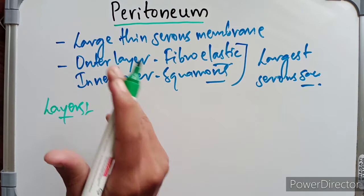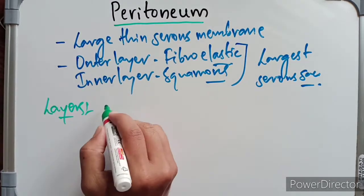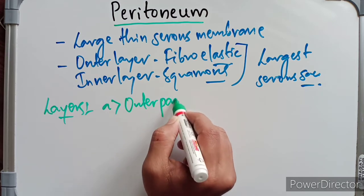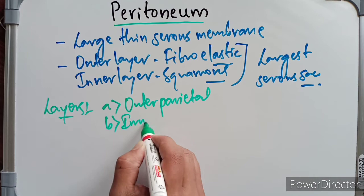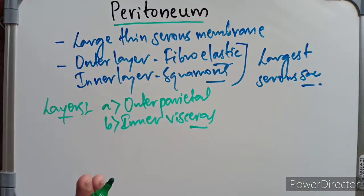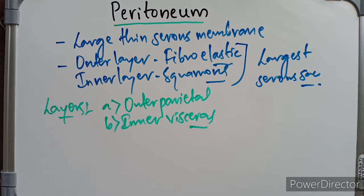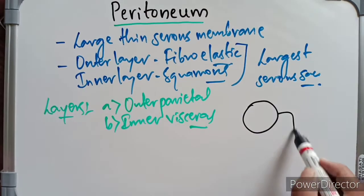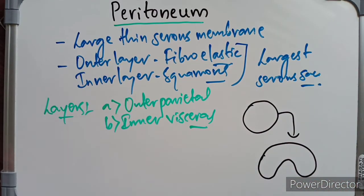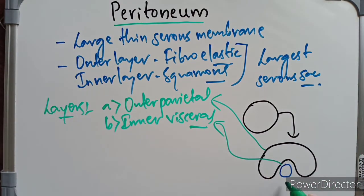The peritoneum forms a closed sack, but when it becomes invaginated by abdominal viscera, it is divided into two layers: an outer parietal layer and an inner visceral layer. When a visceral structure penetrates inside it forms a U-shape, dividing into the outer parietal layer and the inner visceral layer. The abdominal viscera — such as the stomach and liver — are examples of structures that cause this invagination.